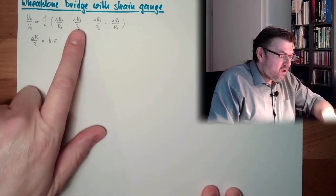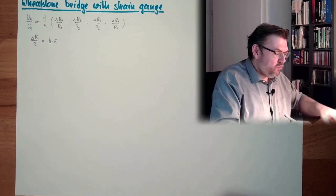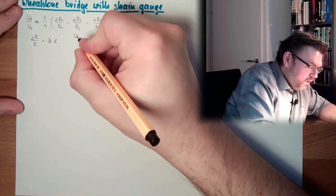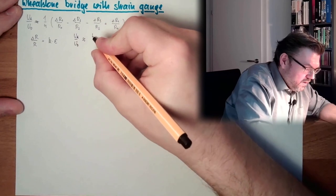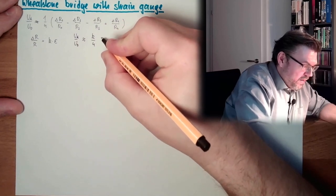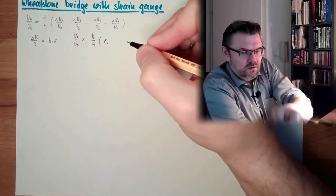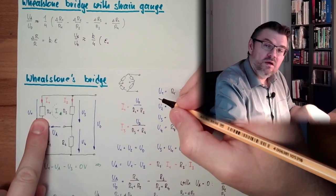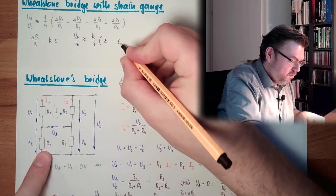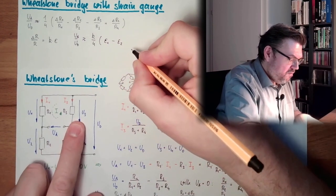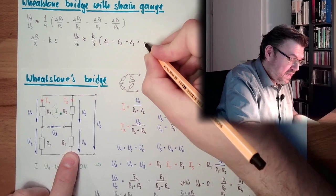If I combine those two things, I end up with the output voltage compared to the input voltage, which is proportional to K divided by 4. Then epsilon 1, if the first resistor is replaced with a strain gauge, minus epsilon 2, minus epsilon 3 — whatever strain those gauges are measuring.